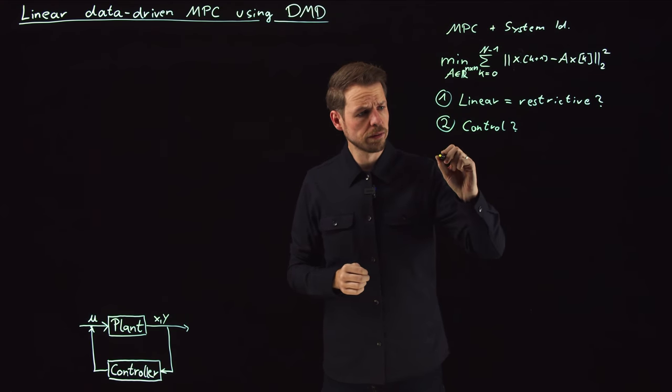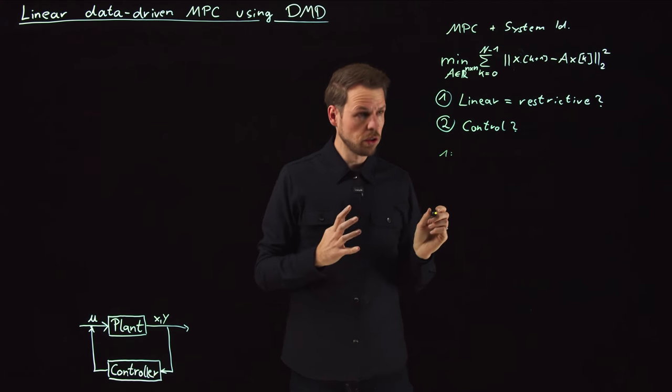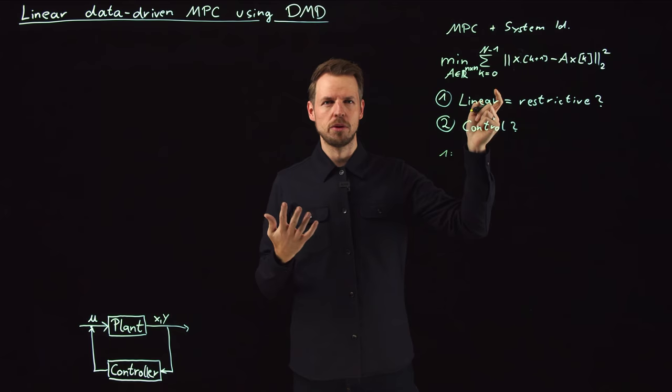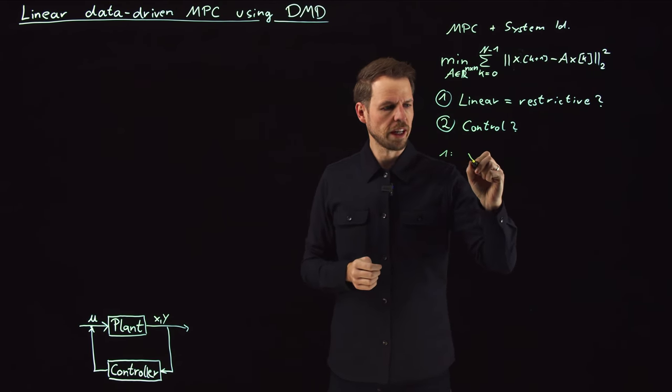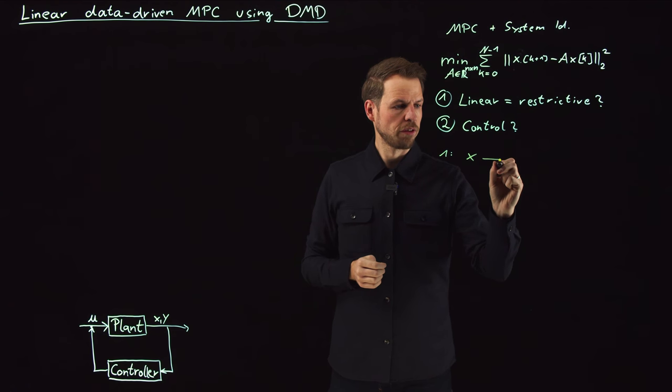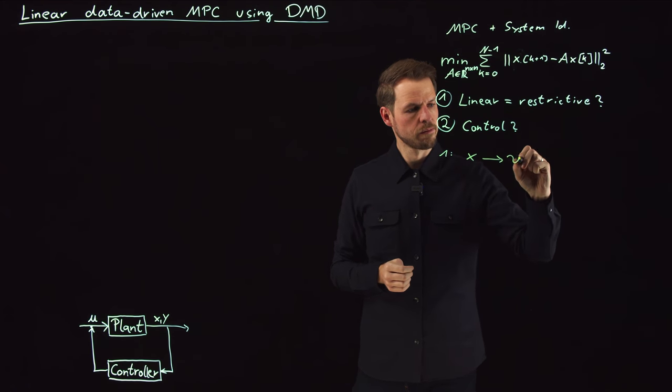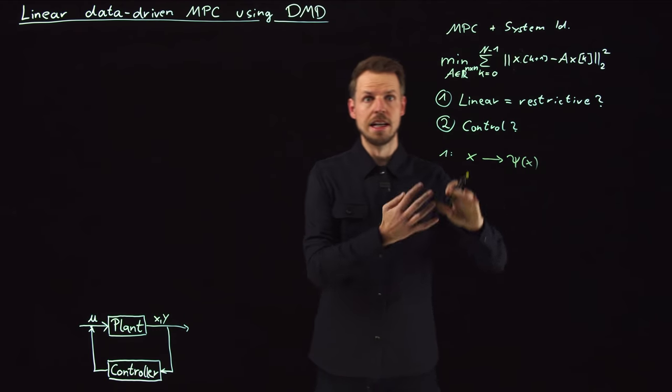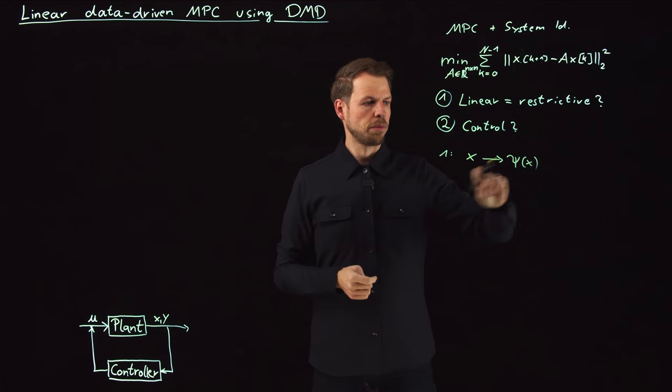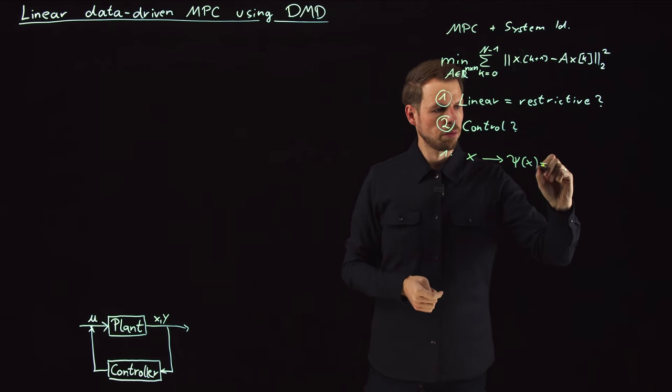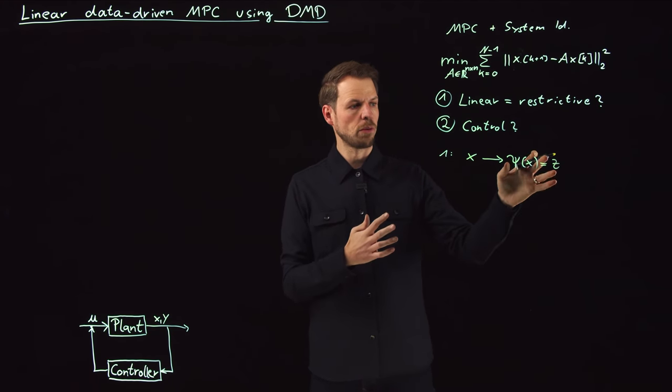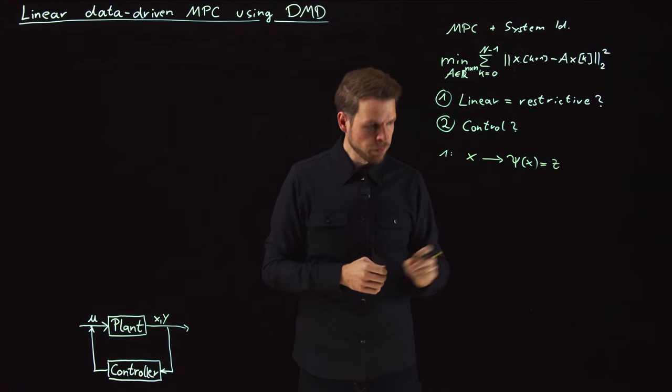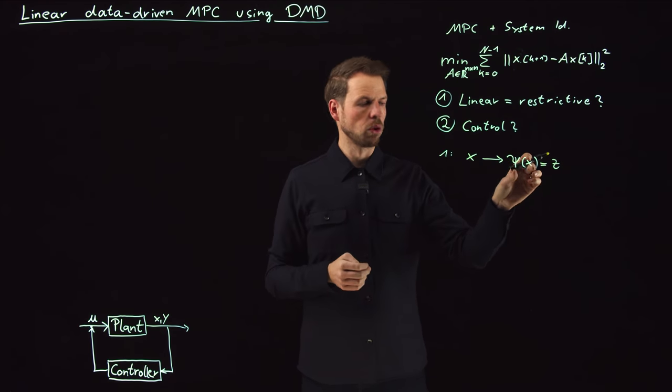So what about one? What we can do is the simple trick that we have used before, we introduce a feature map. So we take X and we define a dictionary of Psi. And so we map X to this lifted space Psi of X that we can denote by Z.